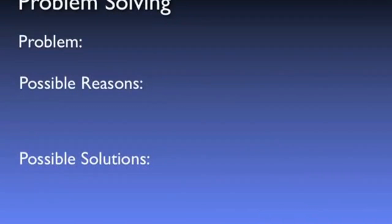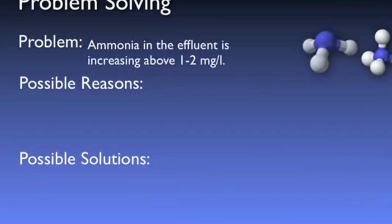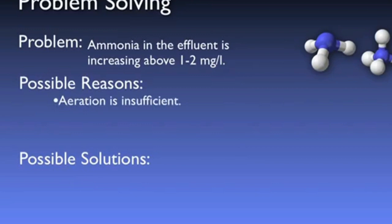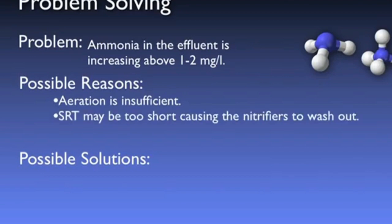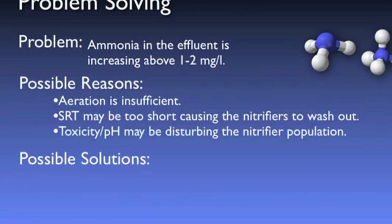During your routine operational sampling, you notice that the ammonia in the effluent is beginning to rise above 1 to 2 milligrams per liter. Let's think about what could be causing this. We know that nitrification is an oxygen-hungry process — perhaps the aeration is insufficient. We also know that nitrifiers grow more slowly; perhaps the SRT is too short due to an influence of temperature. Also, we know that nitrifiers are very sensitive to changes in pH or toxic conditions — perhaps this performance loss is due to a disturbance of that nature.